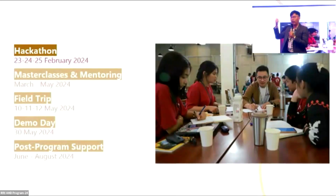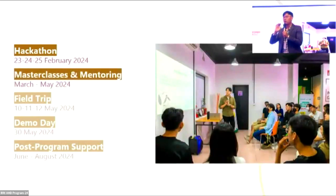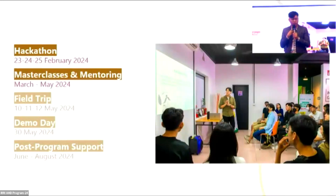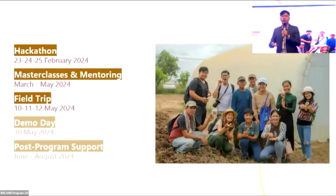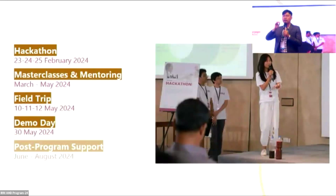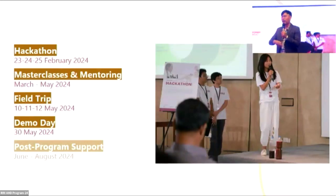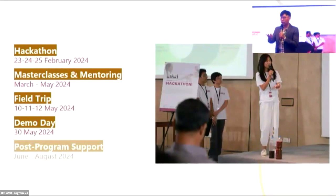The program follows a few steps: first, a hackathon where youth from different backgrounds come together. Then we select some teams to go to the masterclass and mentoring stage, where we equip them with business training and capacity building. We also provide field trips so they can understand the ecosystem and how to best work with farmers. This leads to a demo day where participants share their findings and progress. Lastly, we provide post-program support — making sure they have enough support, know what to do, have the right network, and have a product launch.